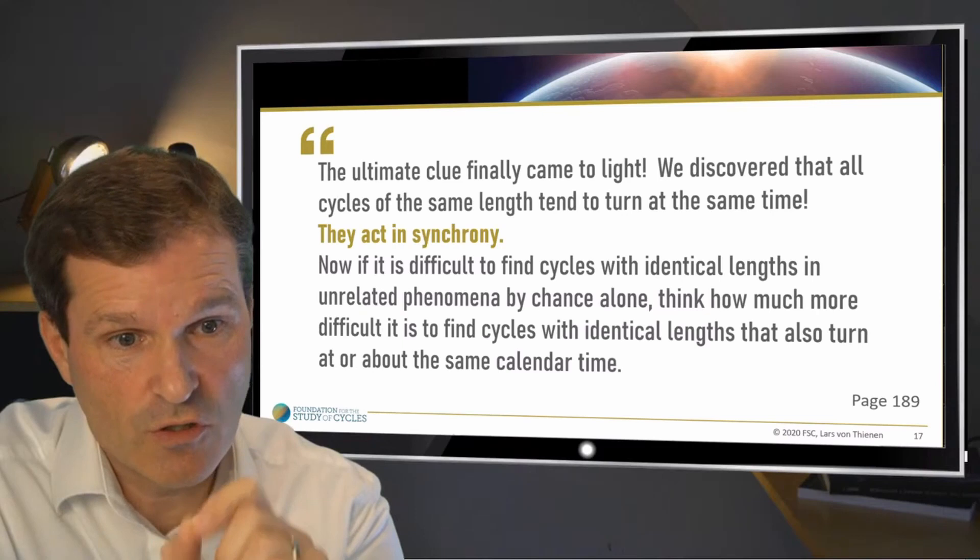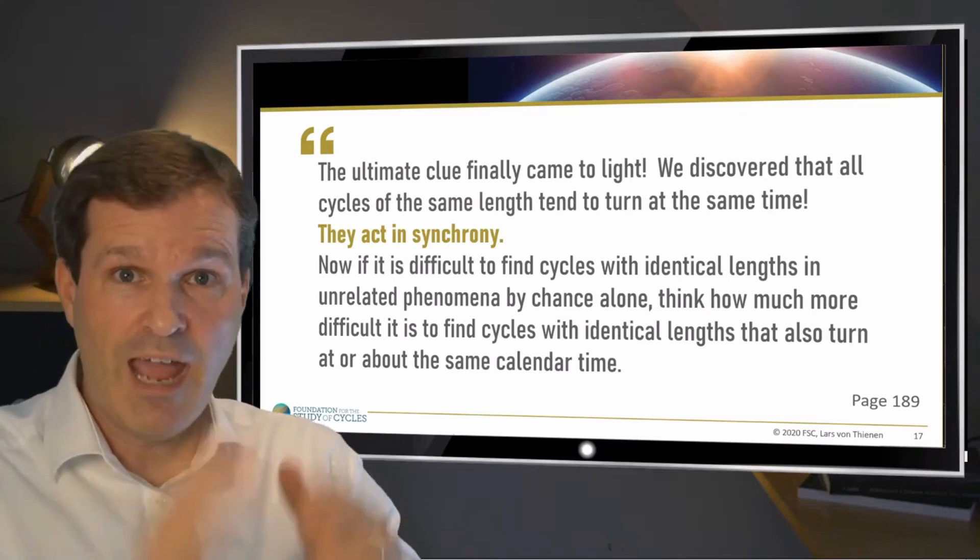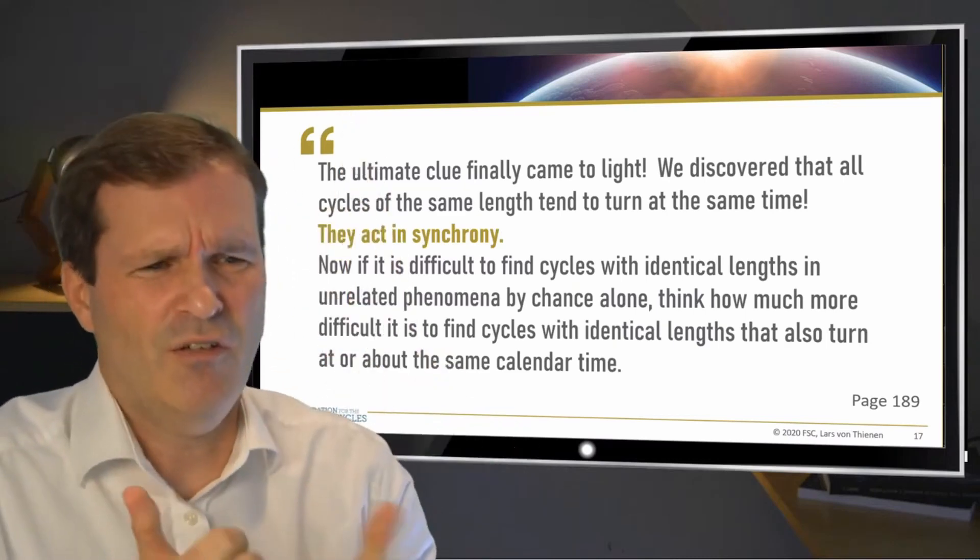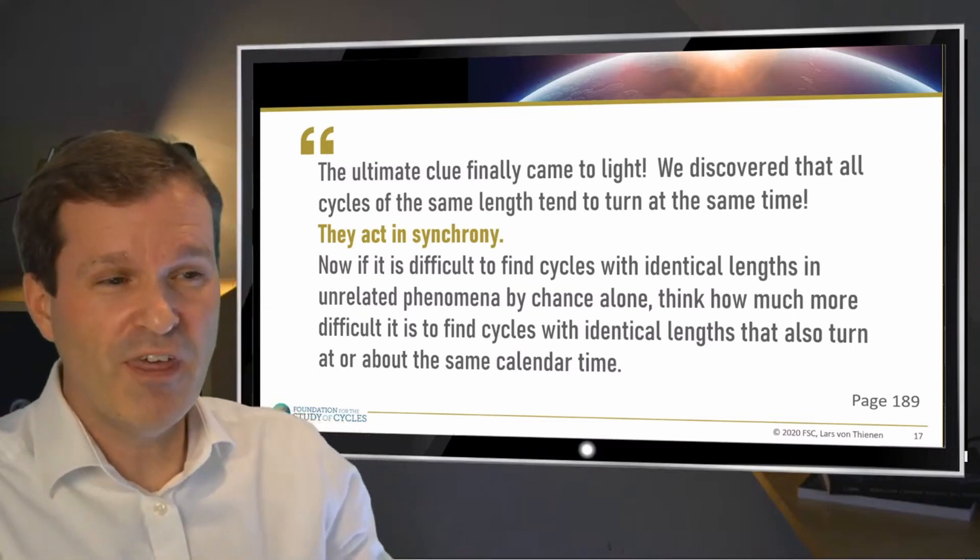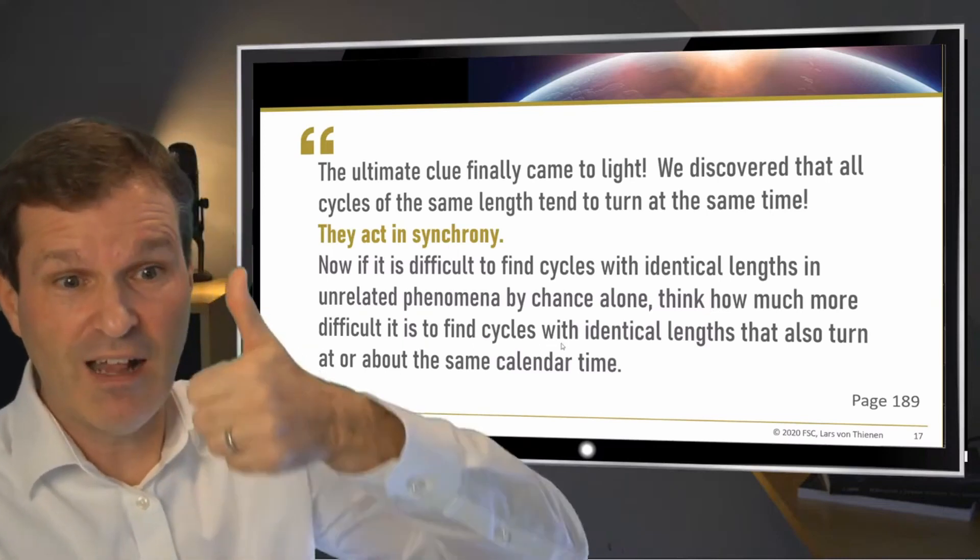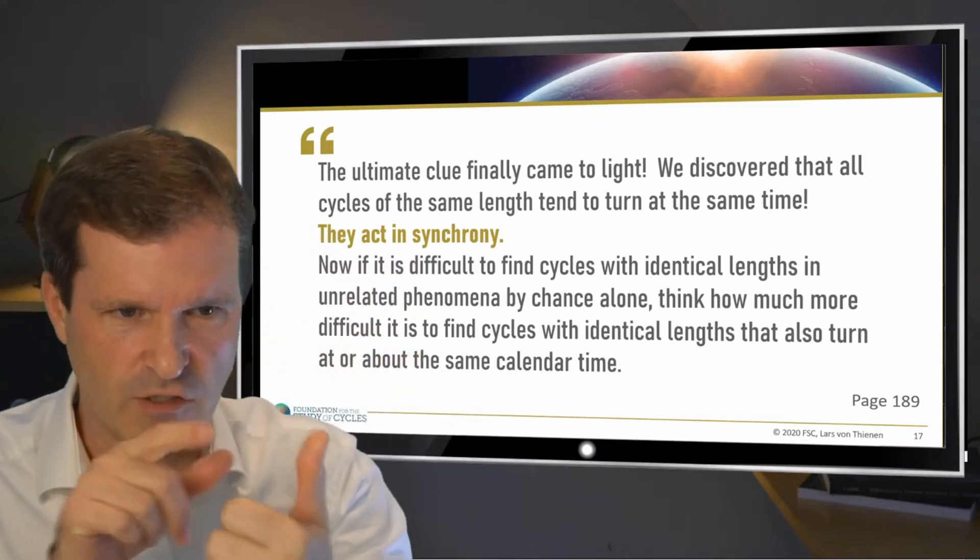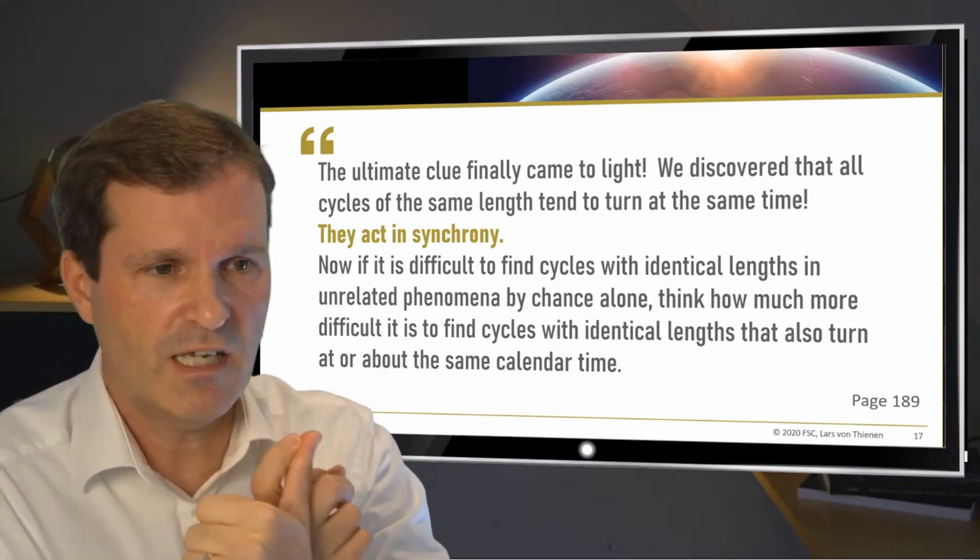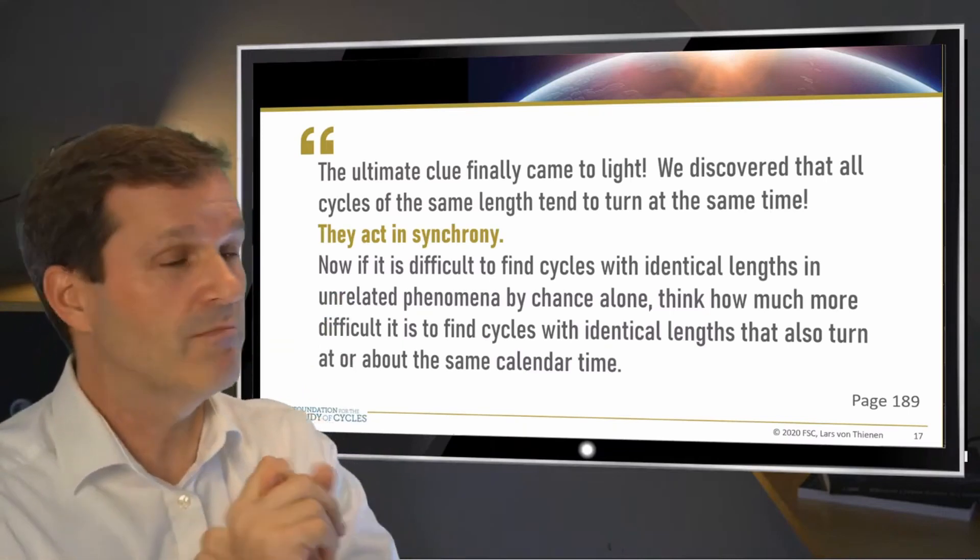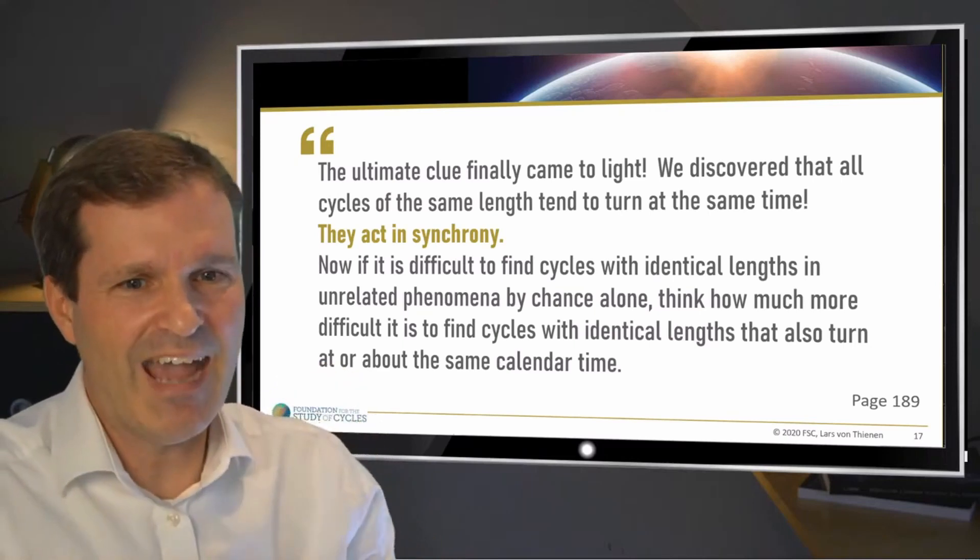The ultimate clue: we discover that all cycles of the same length tend to turn at the same time. They act in synchrony. Think about it: it's difficult to find cycles with identical length anyhow. If you find the same cycle with the same length in different data sets, that's even not so simple and easy. But think about how much more difficult it is to find cycles with identical length that also turn at the same time.